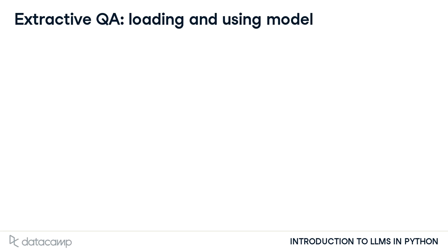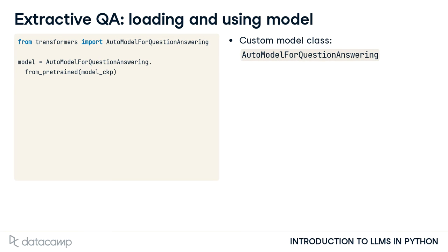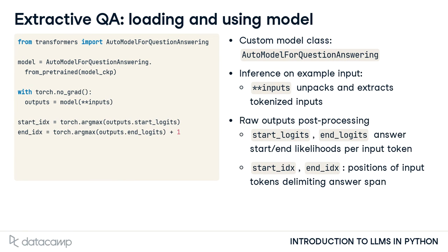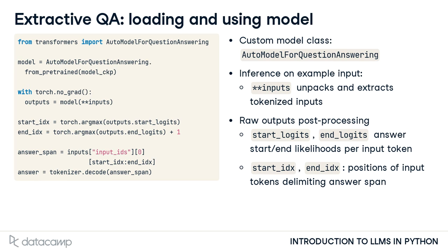We instantiate the model using the AutoModel for question answering class, passing the model checkpoint variable with the model's name from the hub. We do the forward pass for inference, using a double asterisk to unpack the inputs dictionary. Next, we preprocess the raw outputs, analyzing the start and end logits for every input token, extracting the most likely answer location, and decoding the answer. We added 1 to the end position index to ensure the last token in the answer is included.